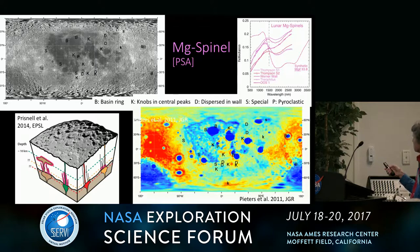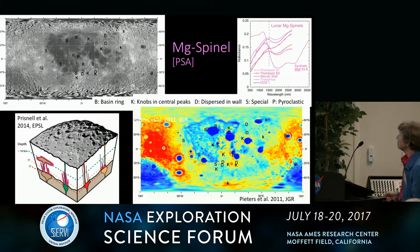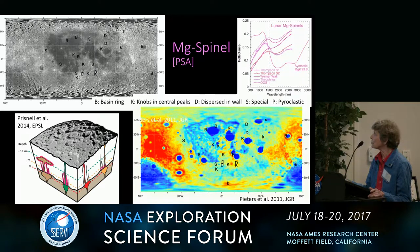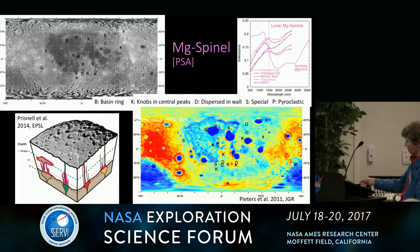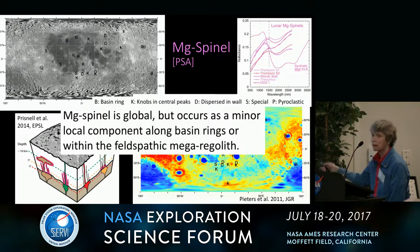Magnesium spinel is very diagnostic — it has none of the mafic minerals we see with olivine and pyroxene, but it has an enormous strong spinel feature with another feature at longer wavelengths. You have to have this sort of little bump seen in all the diagnostic distributions. These are where we've seen the magnesium spinel — associated in a variety of areas including basin rings, but also in dispersed areas in the debris from major impacts. Magnesium spinel is global, but occurs as a minor component along basin rings with feldspathic megaregolith.